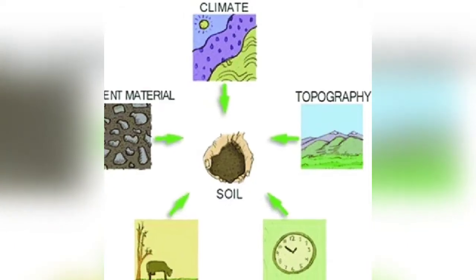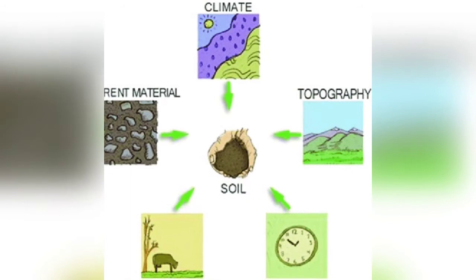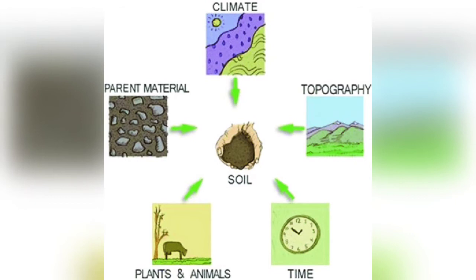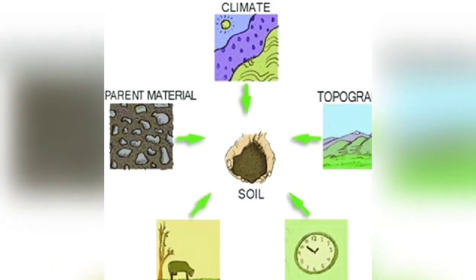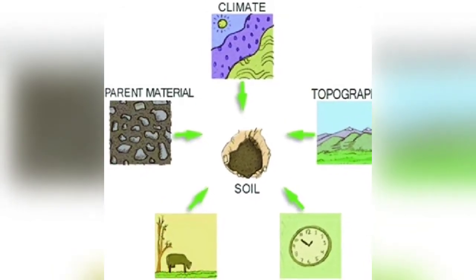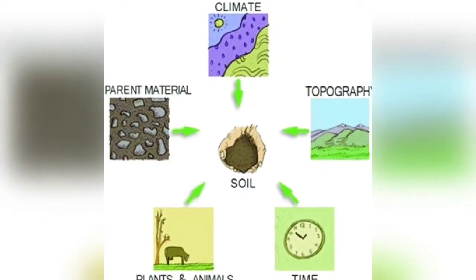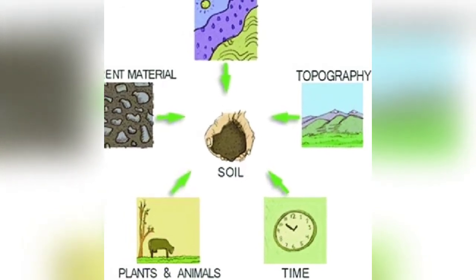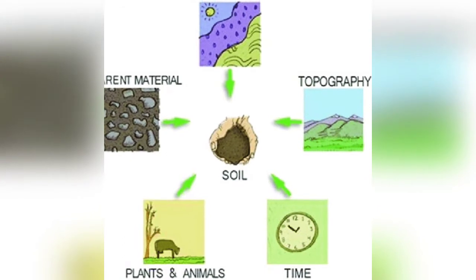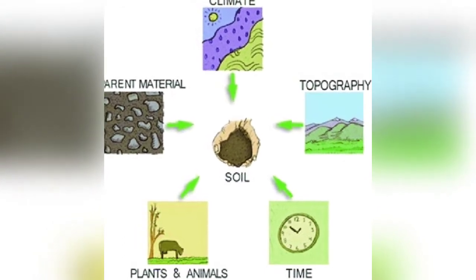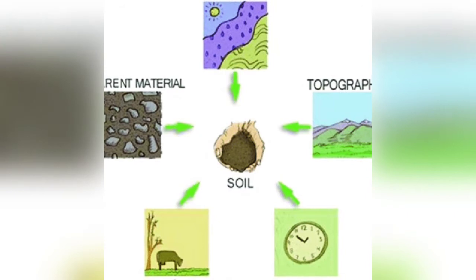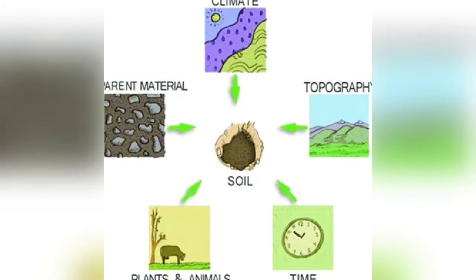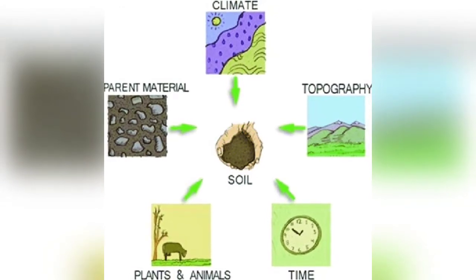The type of soil found in a region depends on a variety of factors such as parent rock material, relief, climate, and time. The parent rock determines the colour, texture, chemical properties, mineral content, and permeability of soil. Topography also plays an important role — steep slopes have thin layers of soil while gentle slopes have thick layers. Temperature and rainfall affect the process of soil formation and help in decay and decomposition of the parent rock.